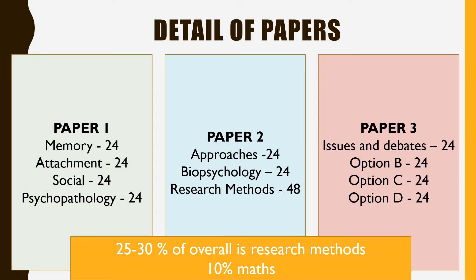On to paper three. Paper three has a core topic of issues and debates, which every student in the country will study. Then there are optional blocks — it's usually the teacher or school that decides what you cover. For example, you might do relationships, forensics, schizophrenia, gender, or cognition and development. That's really important to note, because it can be quite scary when you look at that large A-level textbook — that's because it contains all the optional topics as well.